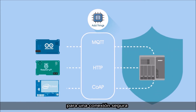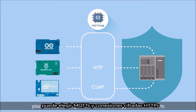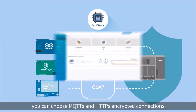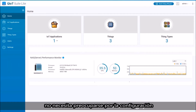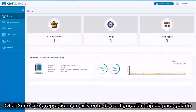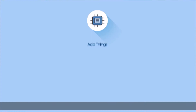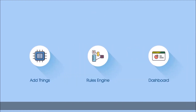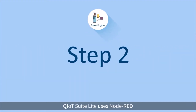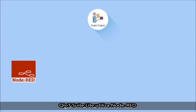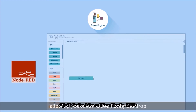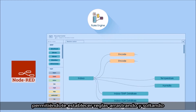For a secure connection, you can choose MQTT's and HTTP's encrypted connections. You don't need to worry about setting up — QIOT SuiteLite provides a quick setup wizard to guide you.